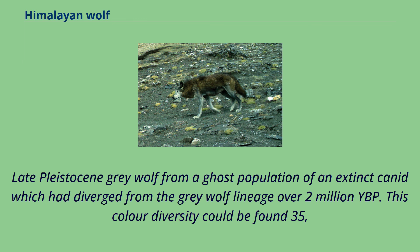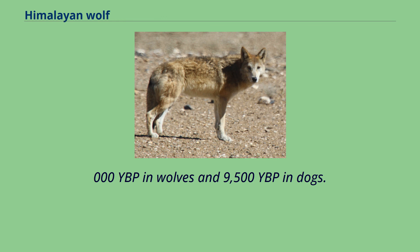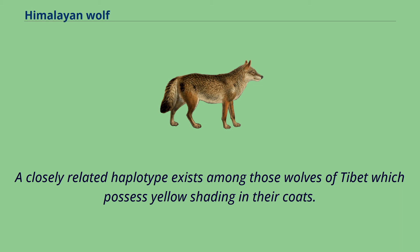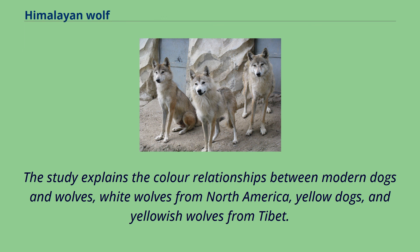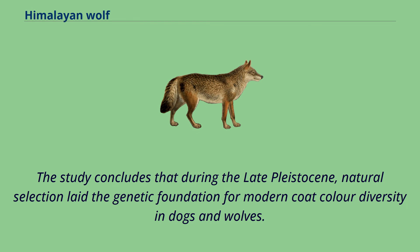This color diversity could be found 35,000 years before present in wolves and 9,500 years before present in dogs. A closely related haplotype exists among those wolves of Tibet which possess yellow shading in their coats. The study explains the color relationships between modern dogs and wolves, white wolves from North America, yellow dogs, and yellowish wolves from Tibet. The study concludes that during the late Pleistocene, natural selection laid the genetic foundation for modern coat color diversity in dogs and wolves.